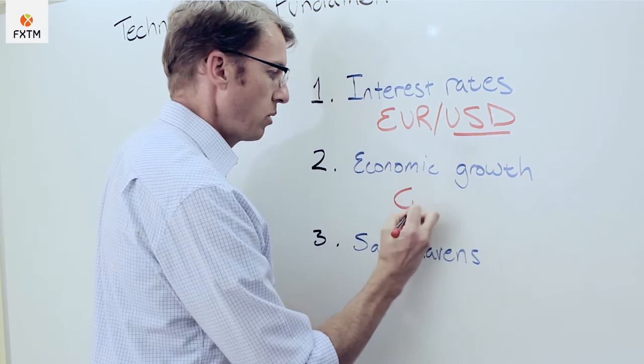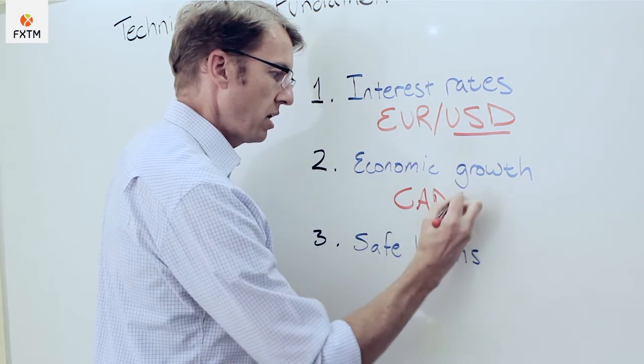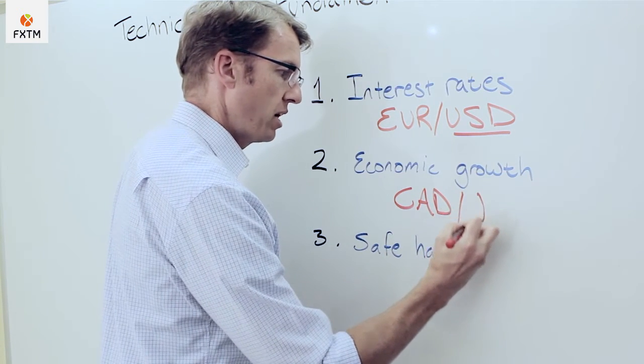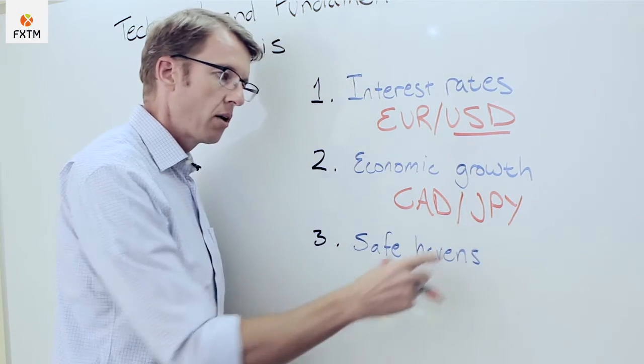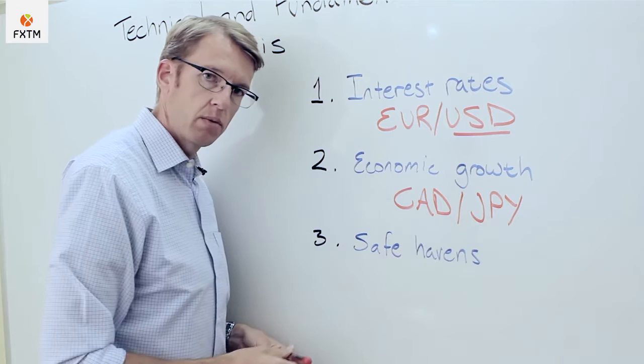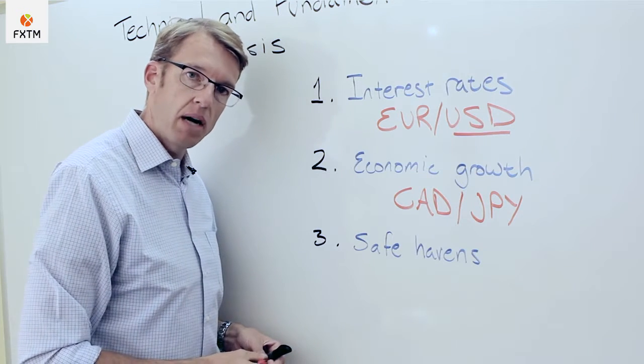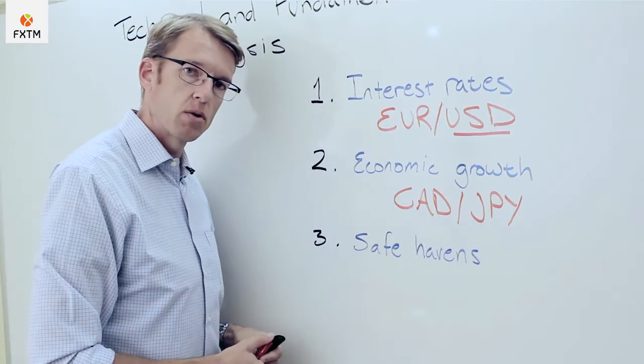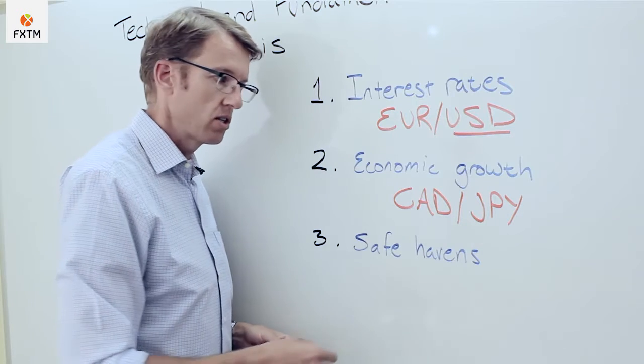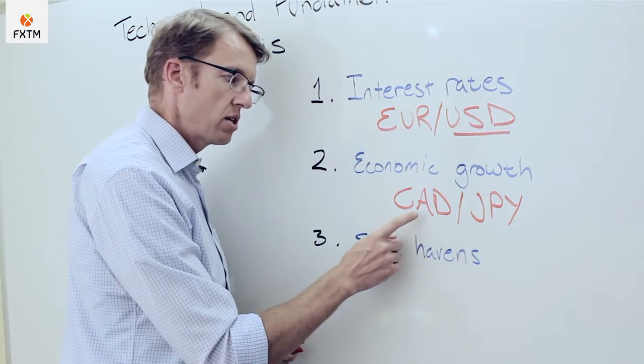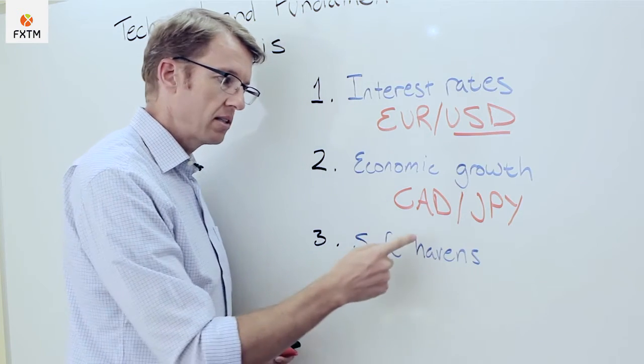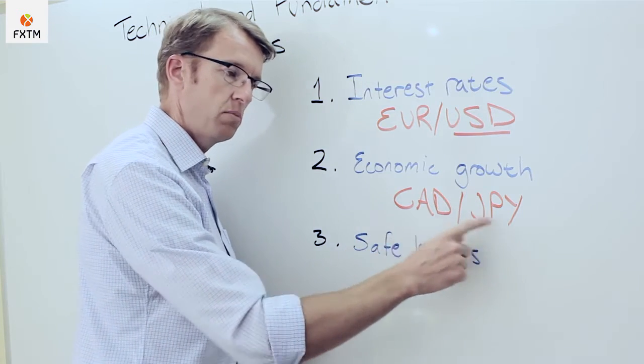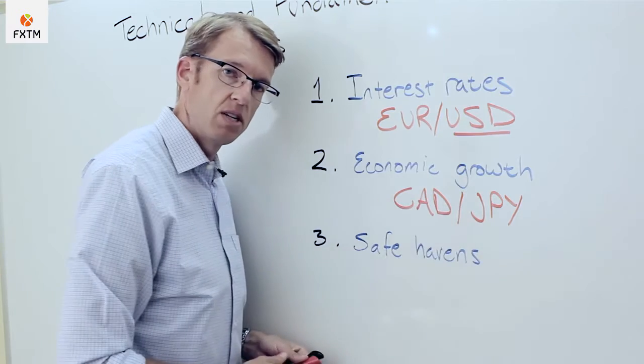Here's an example where when commodity prices and particularly energy prices began to fall quite dramatically in 2014, although the Japanese economy was historically relatively weak, the decline in commodities, because of flat economic growth globally and of course an overproduction of commodities in general, was a much more significant impact on the Canadian dollar. Therefore, we would have expected that to dominate and therefore the trend between these two to be in favor of the Japanese yen.